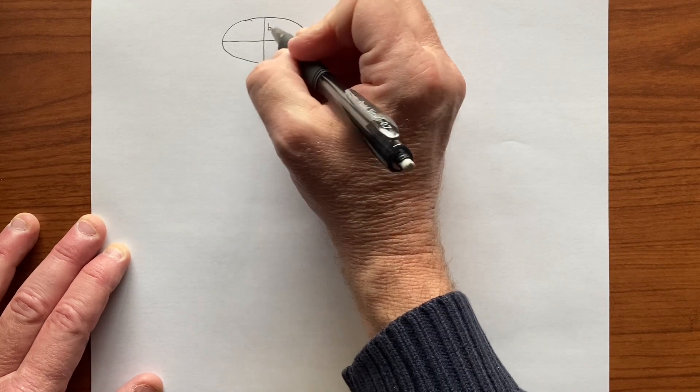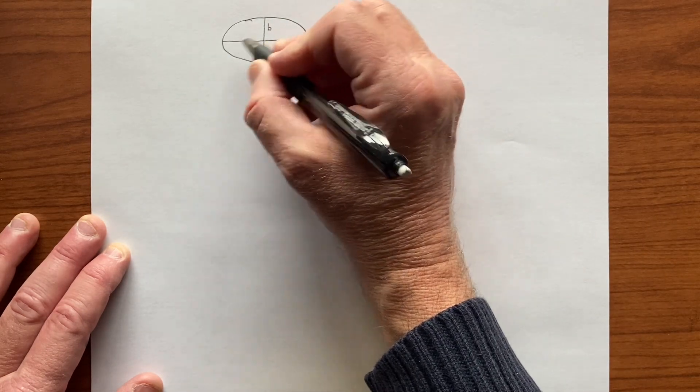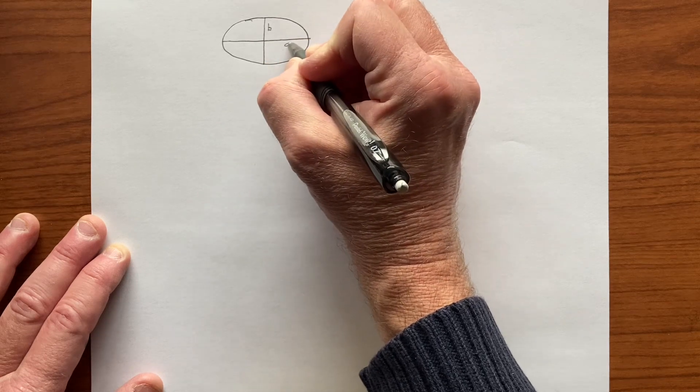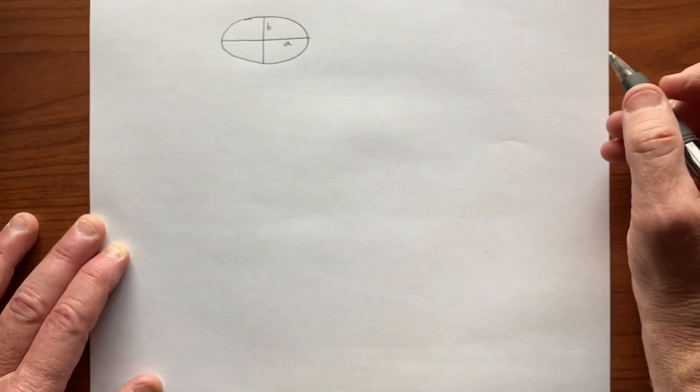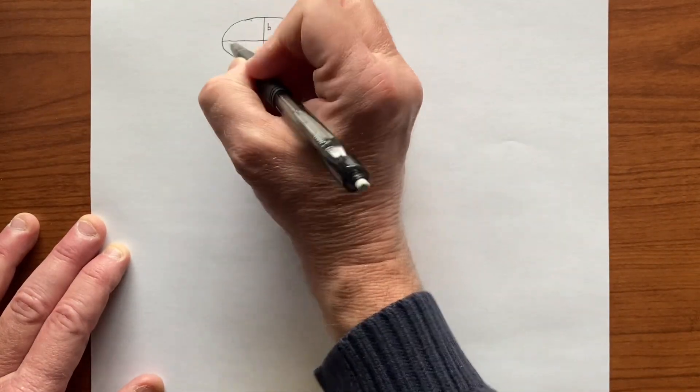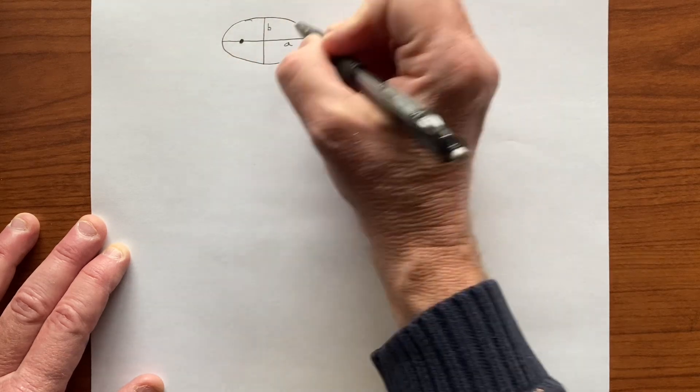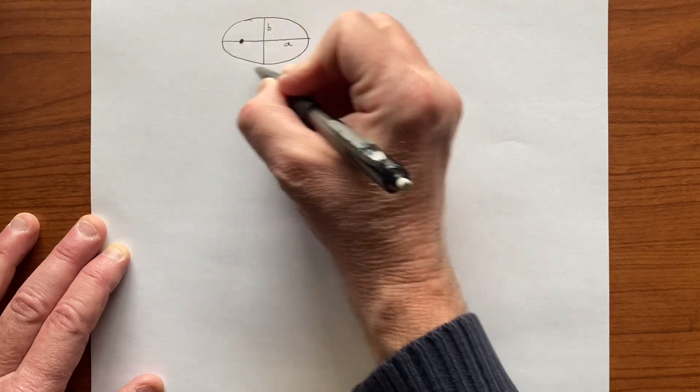Semi-minor axis, I think it's called B, and here we have the semi-major axis. This distance here is A, that distance is B again. One object is at a focal point, and the other object goes around this path.